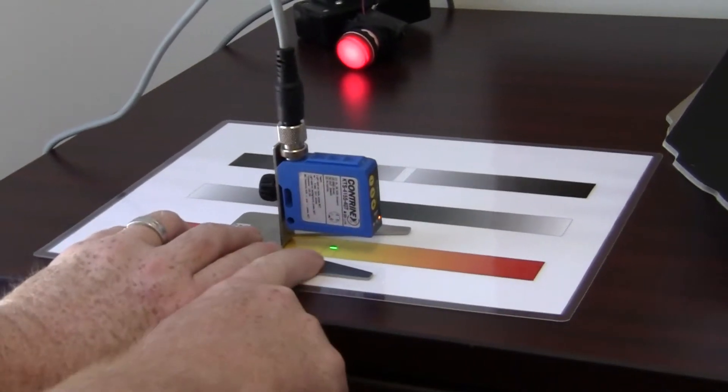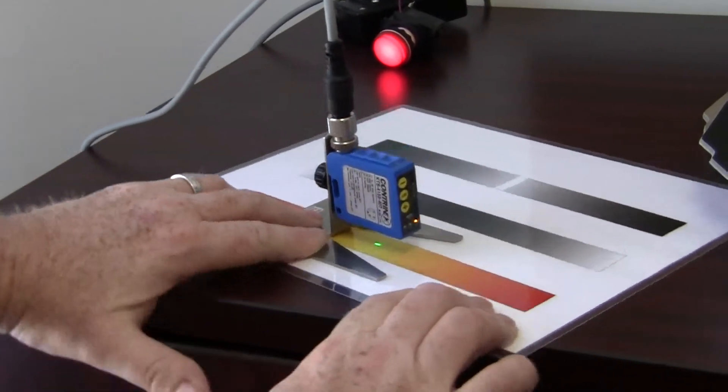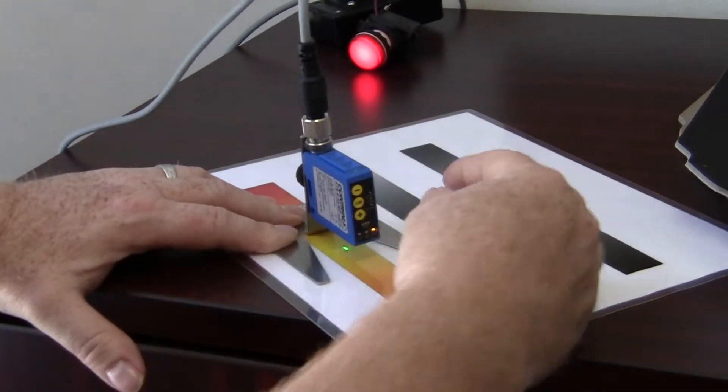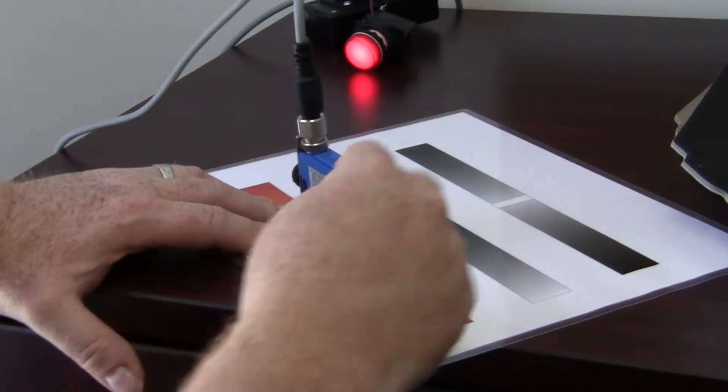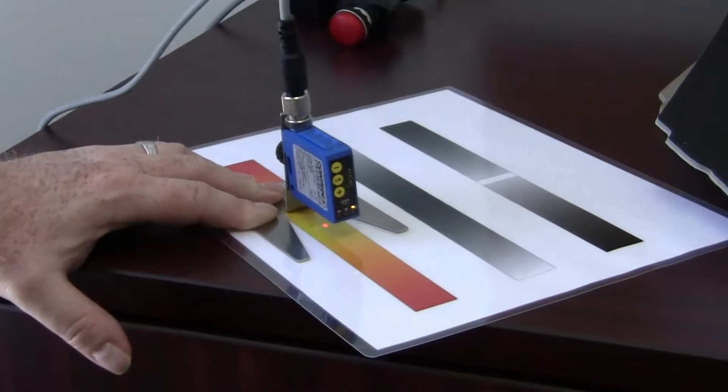First, you set the sensor on the registration mark, or eye spot, as you will. And you press and hold the set button until the channel 1 light blinks.